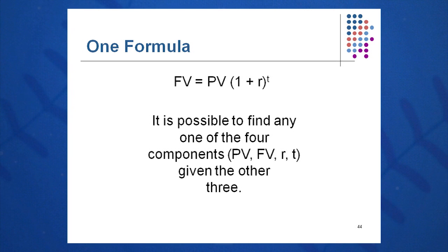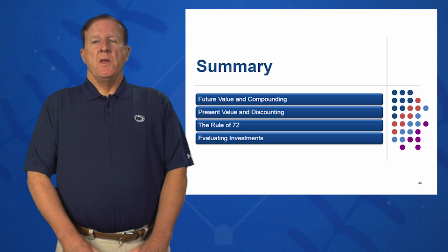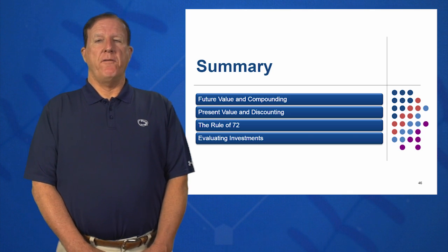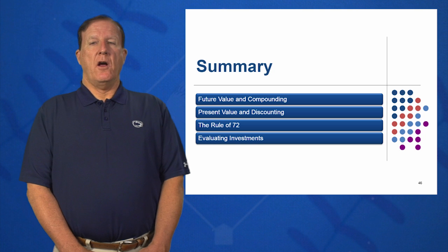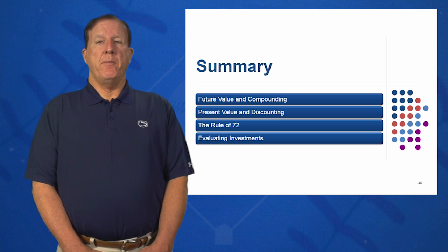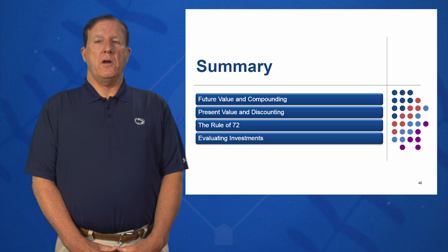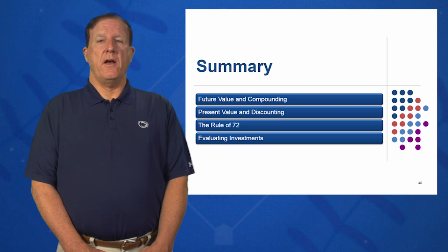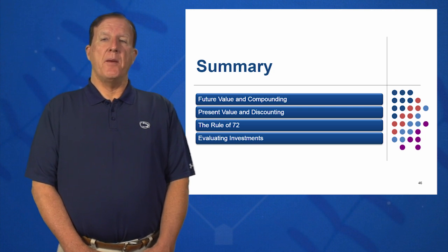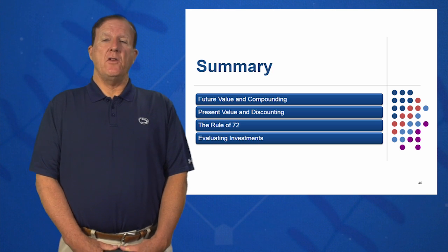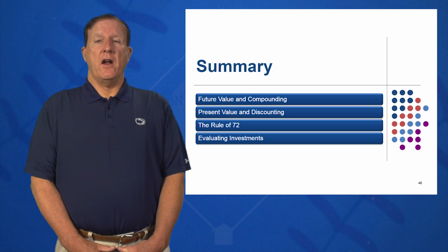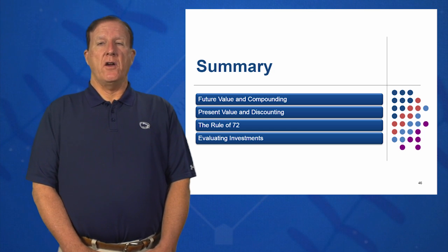This is one of the most powerful concepts in corporate finance and personal finance: future value equals present value times 1 plus R to the T. In summary, in session five you learned very powerful concepts on present value, future value, percent R — also known as compound annual growth rate — and time. We learned about future value and compounding, present value and discounting, the rule of 72, and how to use these equations to evaluate investments in our daily lives. I hope you enjoyed session 5 of Introduction to Finance.